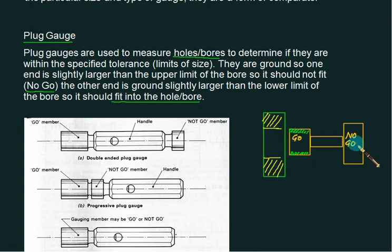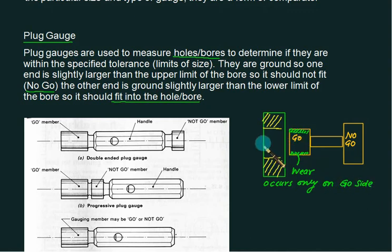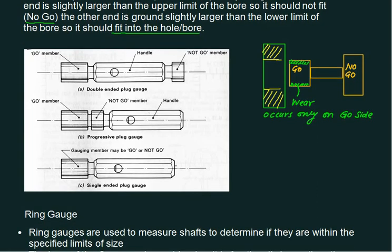Since NO GO will never enter into the hole, wear never takes place on the NO GO part, but GO will always have some wear. So while designing the GO part we must consider the wear allowance. In the numerical, if wear allowance is given then consider it, otherwise you can neglect it. Wear occurs normally on the GO side for plug gauges. First, calculate the work tolerance (hole tolerance), take 10% of it as gauge tolerance, and then 10% of gauge tolerance equals wear tolerance — otherwise the wear percentage is normally given.